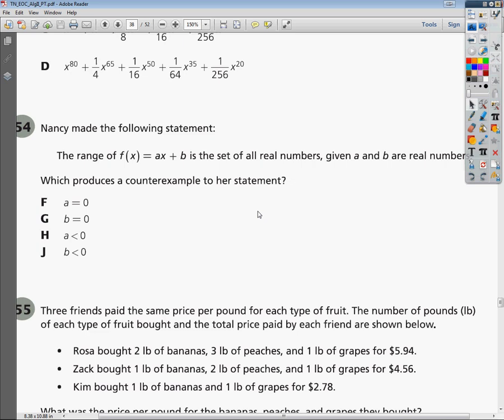Welcome, this is the Tennessee Algebra 2 End-of-Course Practice Test question number 54. Nancy made the following statement: the range of f(x) equals ax plus b is a set of all real numbers, given a and b are real numbers. What produces a counter example to her statement?